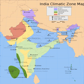The climate of India comprises a wide range of weather conditions across a vast geographic scale and varied topography, making generalizations difficult. Based on the Köppen system, India hosts six major climatic subtypes, ranging from arid desert in the west, alpine tundra and glaciers in the north, and humid tropical regions supporting rainforests in the southwest and the island territories.